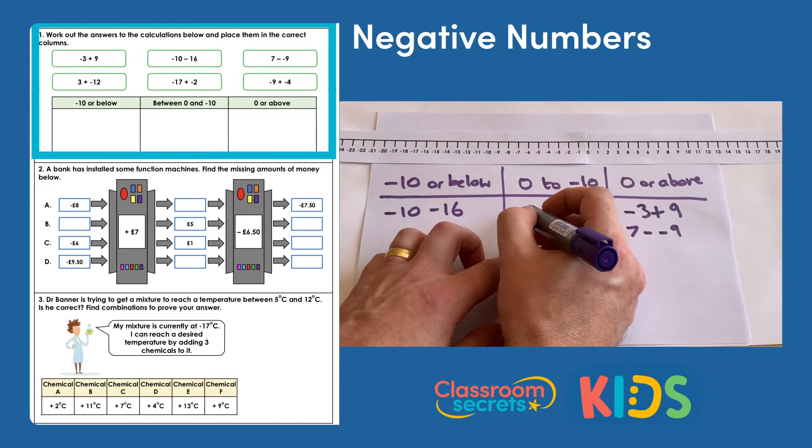The fifth one is negative 17 and we're adding negative 2. Adding a negative value means we're going to do a takeaway. Moving 2 steps down from negative 17 brings us to negative 19, so negative 17 add negative 2 goes in the negative 10 or below column.